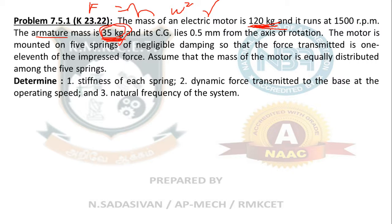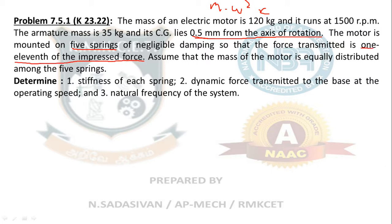This entire mass you have to use to find the static deflection. This you have to use to find the centrifugal force. So, 35 kg armature and its center of gravity lies 0.5 millimeter from the axis of rotation. That r is your 0.5 millimeter. The motor is mounted on five springs of negligible damping so that the force transmitted is one-eleventh of the impressed force. So this epsilon is directly given in the question.